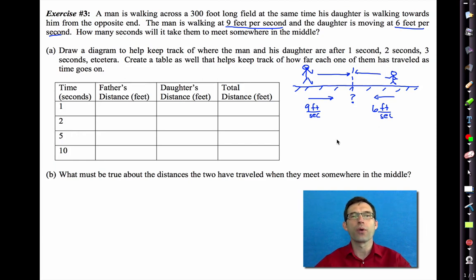So let's do a little bit of what we did before. What I'd like to do is I'd like to fill in this table. I'd like to fill in how far the father has walked after one second, how far the daughter has walked after one second. And then what the total distance was that they walked. Now that's pretty easy. After one second, the father has walked nine feet and the daughter has walked six feet.